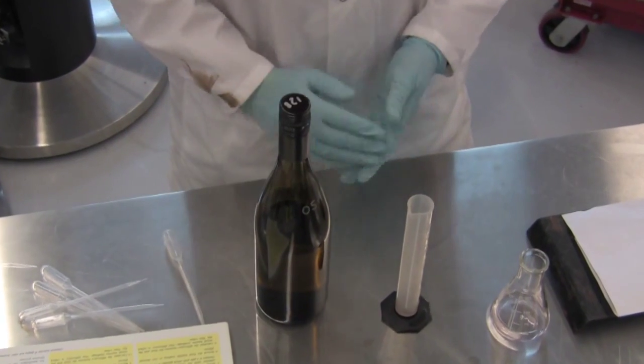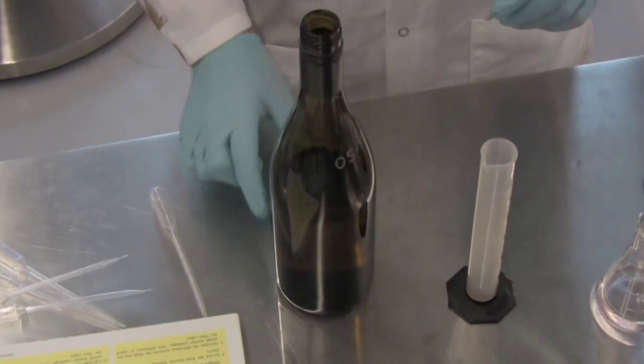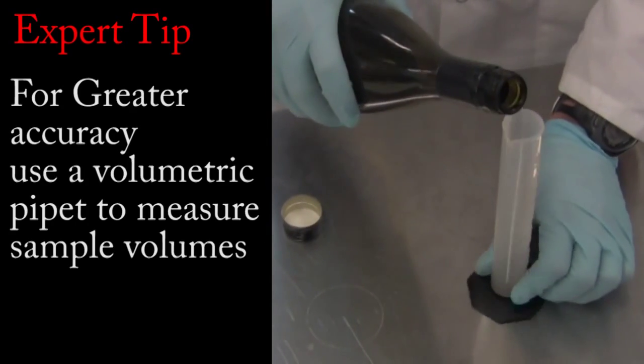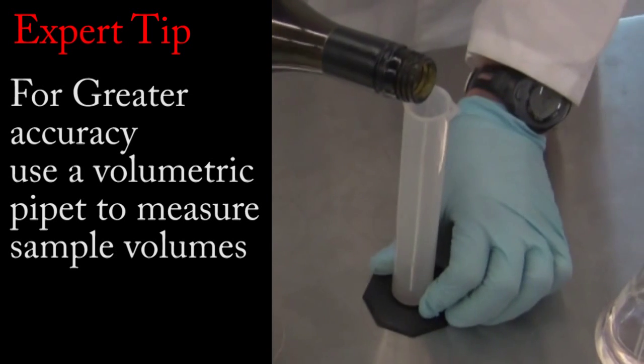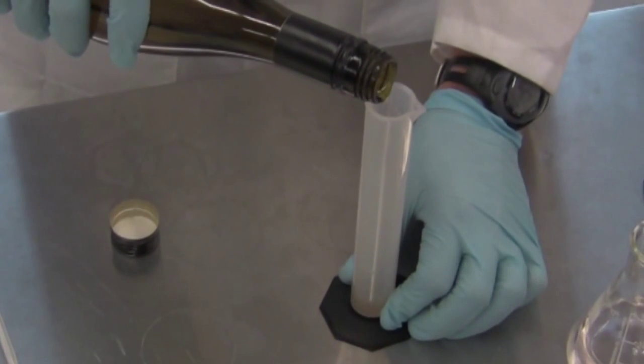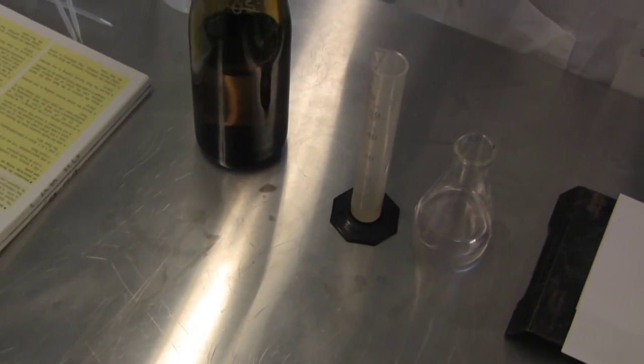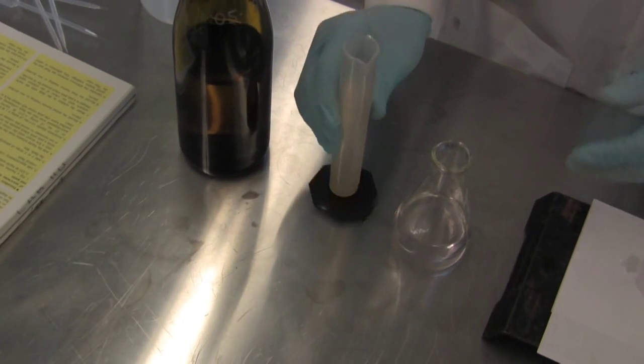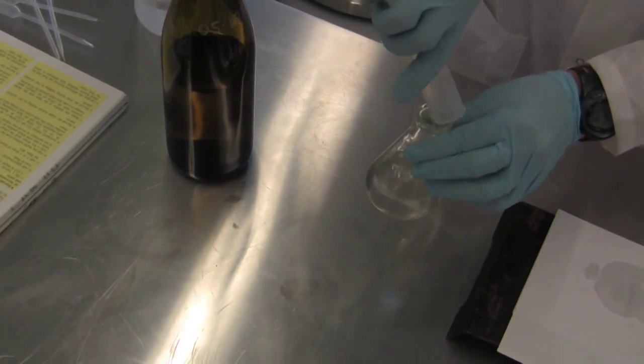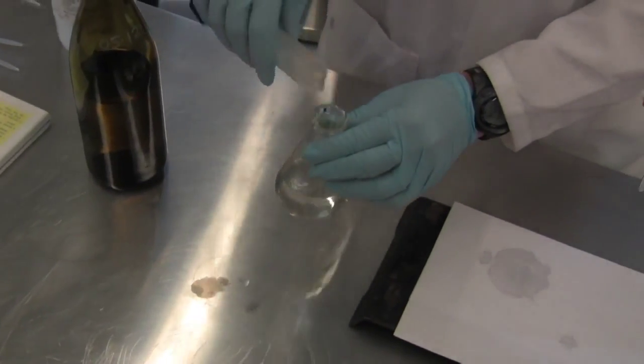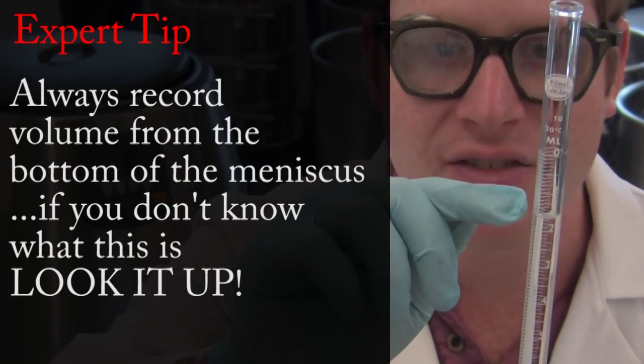So the next step is to add our wine. Now this is where accuracy counts. We need to add exactly 10 milliliters of our wine sample to our flask. I'm using a 50 ml graduated cylinder. So we've got our 10 ml of wine in our graduated cylinder, and we're going to add that to our water and phenolphthalein indicator that's already been titrated to a light peach endpoint. Before we start, we need to record our initial volume, 1.70.